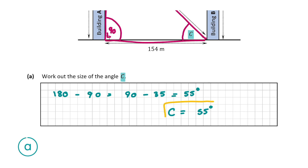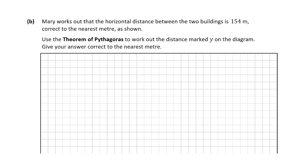For this question you're going to get a total of 10 marks. Now in question B we're told that Mary works out that the horizontal distance between the two buildings is 154 meters, also shown in the diagram. We're asked to use the theorem of Pythagoras to work out the distance marked Y on the diagram and give our answer correct to the nearest meter.